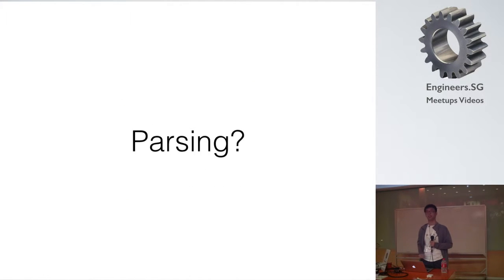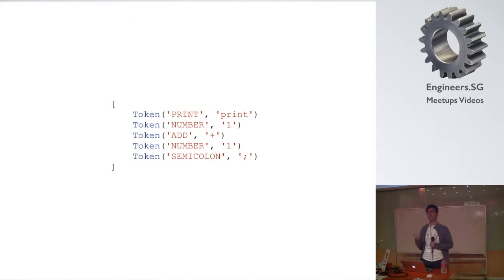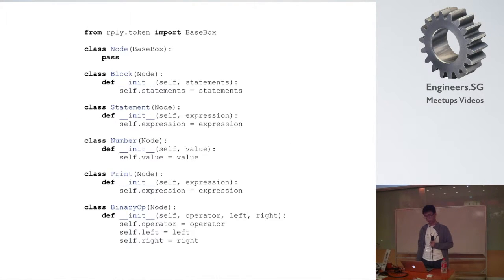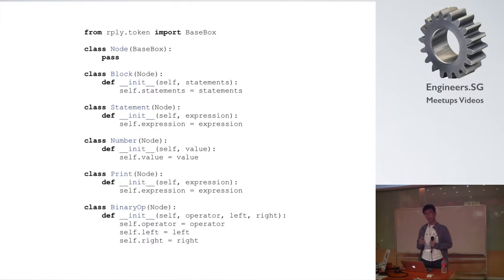Once you have the Lexer, the next step is to write a parser. Parsing is turning your stream of tokens into an abstract syntax tree — a tree representation of your source code. Before we begin writing our parser, we'll first need to define our AST. Each node in the AST can be defined as a Python class that inherits from a base node class, each requiring different arguments to instantiate. The block node is made up of several statement nodes. The statement node consists of an expression. The number node contains a value. The binary op node — for example, addition — contains the left and right numbers as well as the operator.